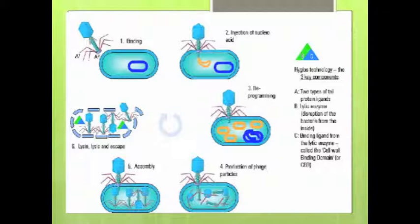When bacteriophages infect bacteria, the virus attaches to the receptors on the cell membrane, then injects the genetic material into the host cell. Those genes incorporate themselves into the genome of that bacteria, and therefore the bacteria has no choice but to reproduce new viral particles. And then, when the cells are lysed open to reproduce, it attacks the bacteria and kills it.